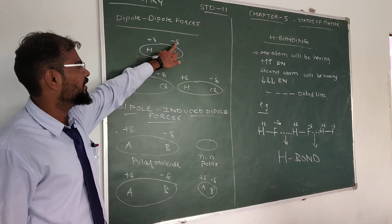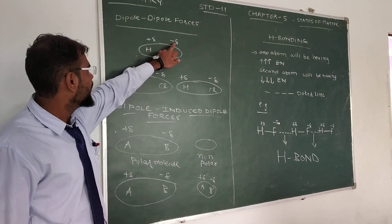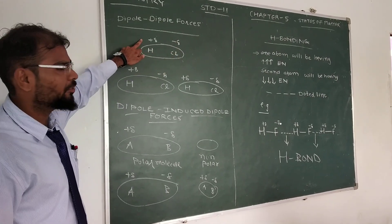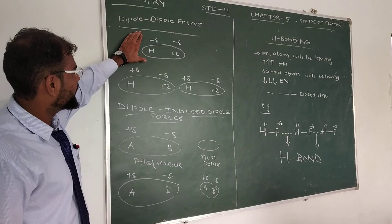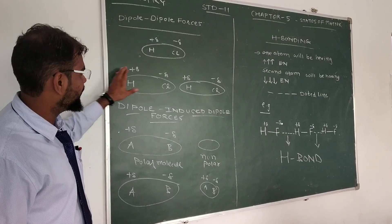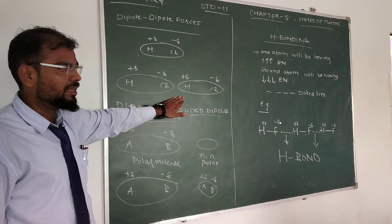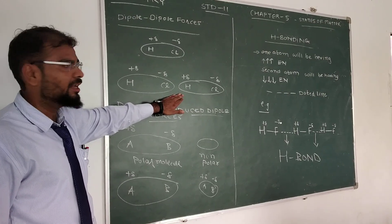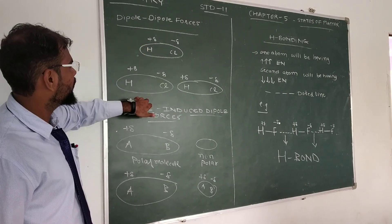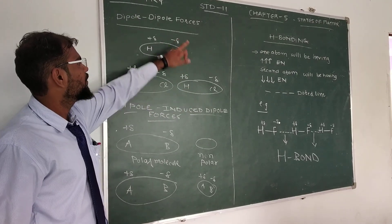for chlorine, partial negative charge will be generated, whereas for hydrogen, partial positive charge will be generated. Such two dipoles, if they are coming closer to each other, then the force is generated, the name is called as dipole-dipole force.